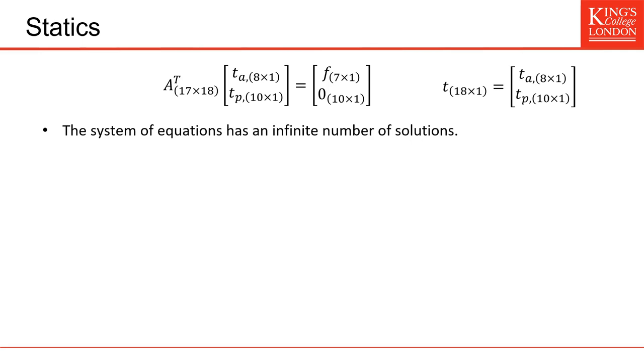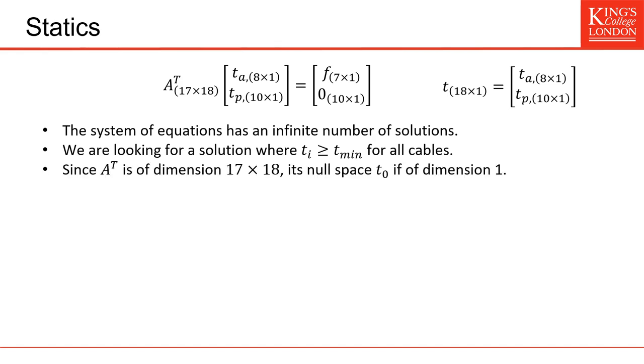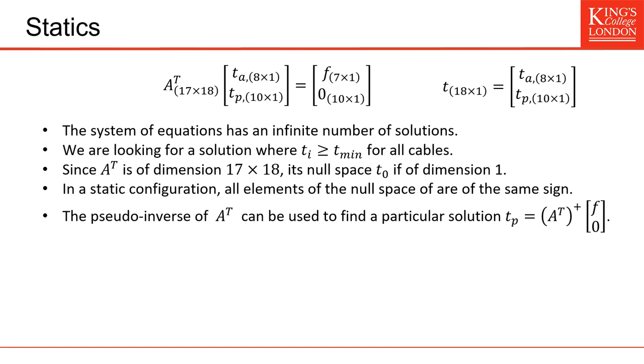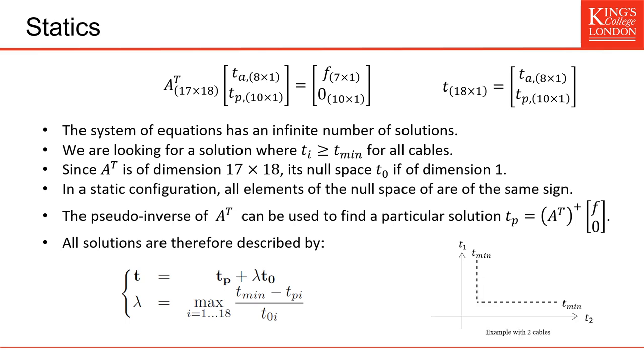This system of equations has an infinite number of solutions, and we are looking for a solution where all its elements have a tension that is higher than the minimum tension for our cables. Since the static matrix is of dimensions 17 by 18, its null space is of dimension 1. And in the static configuration, inside the workspace, all the elements of this null space will be of the same sign. So by using the pseudo-inverse, we can find a particular solution. Maybe this solution doesn't have all the elements with a higher value than the minimum value. But then we can use the null space to move along the vector space of tension until we find a solution where our elements are positive. For example, in a simple example with two cables, we can find a particular solution. And we want a solution where all the tensions are higher than the minimum tension. So by using the null space, we can move along this null space until all tensions are positive.